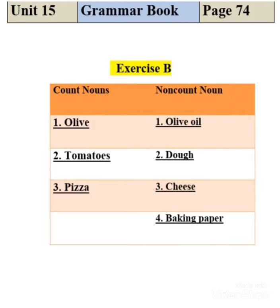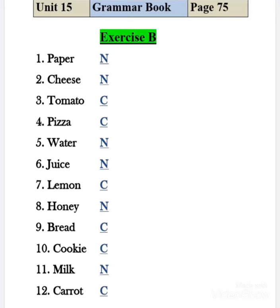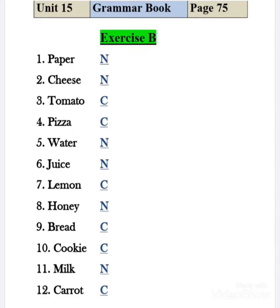Now move to page 75, Exercise B. We have to write 'C' in the blank if the noun can be counted, and 'N' if the noun cannot be counted. In simple words: C for count noun and N for non-count noun.